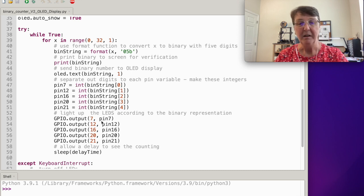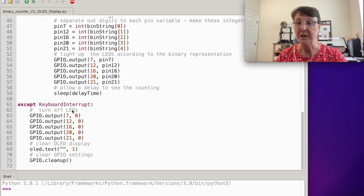Using the correct binary representation, a zero will be interpreted as turn the LED off and a one will say turn the LED on. Then we'll have that short delay so you can see the number for a second and then it'll move on to the next one. It'll keep counting until we do a keyboard interrupt, that's what the try and accept is for. Then we'll make sure all the LEDs get turned off, that we clear the OLED display by sending a blank line to it, and do a GPIO cleanup.